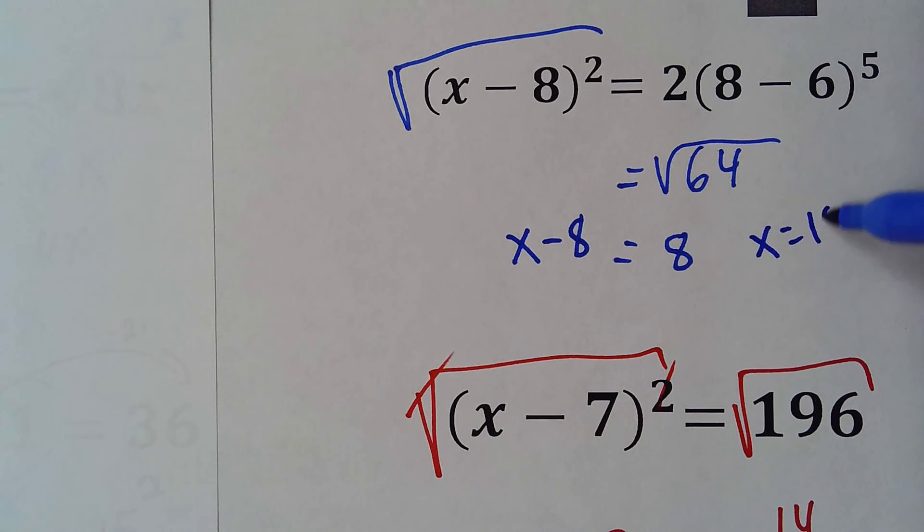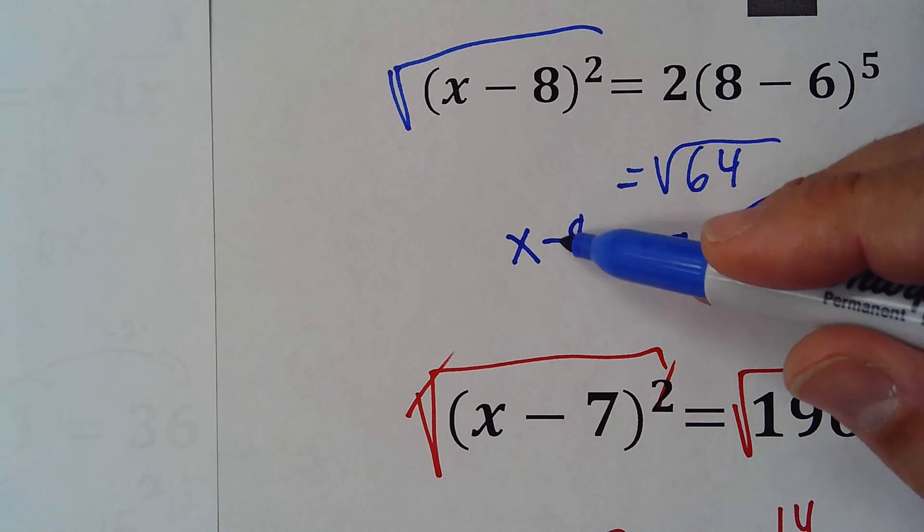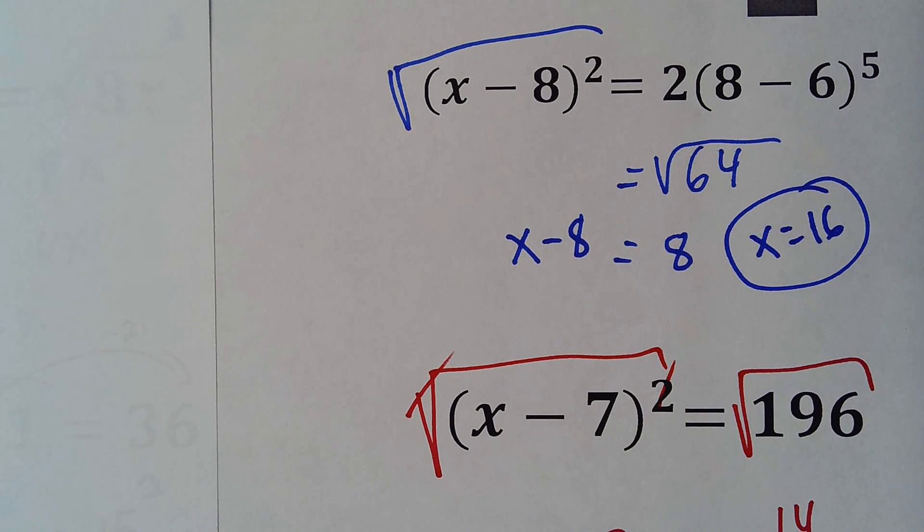So at the end x will equal 16, because I add this 8 negative will be positive, and done. We have the answer.